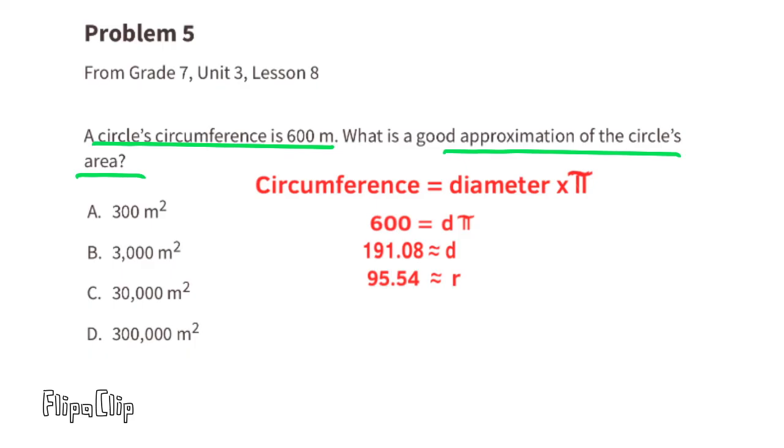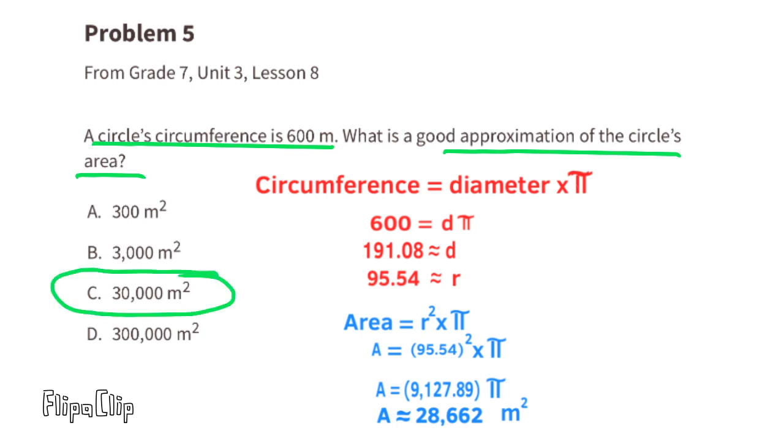This will help me get a good approximation of the circle's area, because the area of the circle is the radius squared times π. The area of this circle is approximately 95.54 squared times π, or 28,662 meters squared. I would select C, 30,000 meters squared.